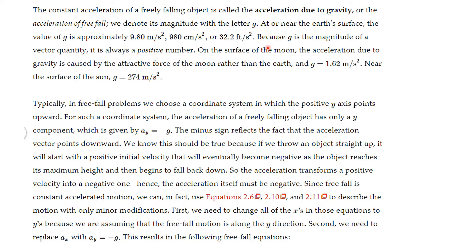Because g is the acceleration is a vector quantity, it's always a positive number. And on the surface of the Moon, which has less mass, g is 1.62 meters per second squared. And on the Sun, which has much more mass, it is 274 meters per second squared.